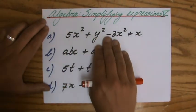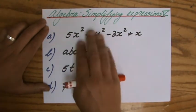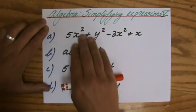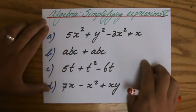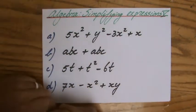5x² plus y² minus 3x—did I say x squared? Again, sorry guys. 5x² plus y² minus 3x² plus x. I have to simplify the expression.